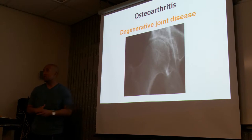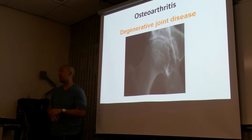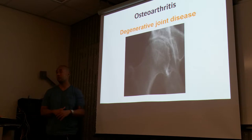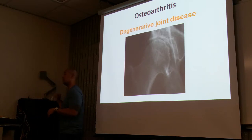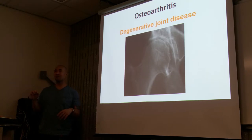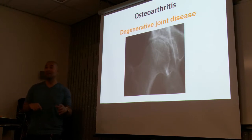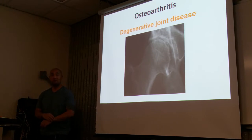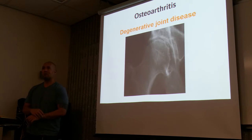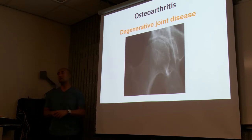Can you get osteoarthritis young, or is it only the old? You can get it young — it can be genetics, it can be hereditary, or it can be a process of old age. Is there a cure? No. Don't be fooled by all those joint pills — they're basically placebo in nature. There isn't really any cure for any type of joint disease.